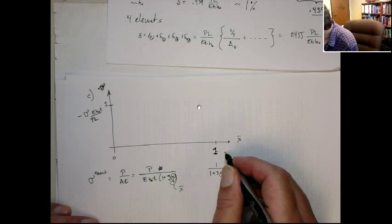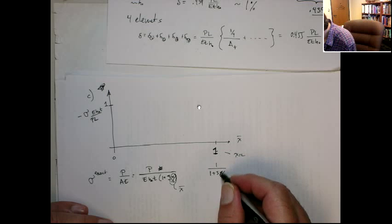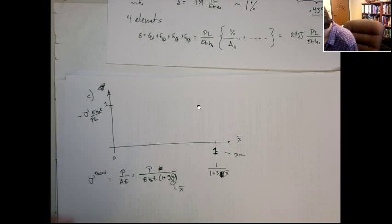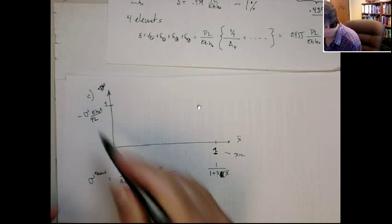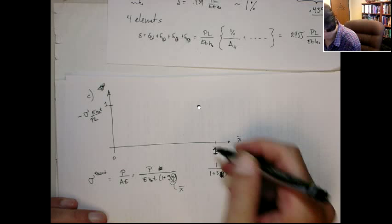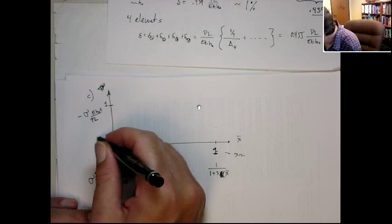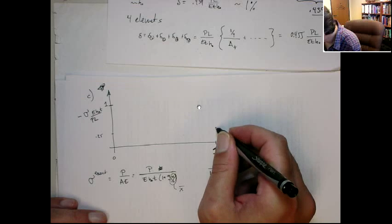We can actually consider this, we'll put a little overbar on it. It's a normalized dimension. So it goes from 0 to 1. At 1, this corresponds to X equal to L. So we're actually plotting 1 over 3 X-bar. So that gives you 1. At 1 here, we get 1 quarter. So it's about here, 0.25.